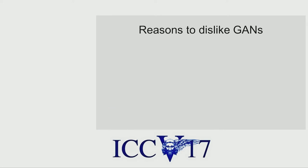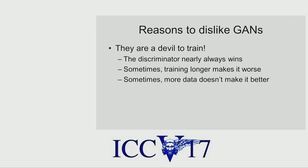But before that, of course, we have to have some disclaimers. What are the reasons to dislike GANs? They're a devil to train. The discriminator nearly always wins. Sometimes training longer makes it worse, which is very annoying. Sometimes more data doesn't make it better, which I don't quite understand. I really hope these things could be nailed one way or the other. Do they really generate a distribution? Some machine learning people might have a heart attack — it's not a real distribution. For us in computer graphics, we don't care. You just need one good picture, and for that GANs have been working very well.